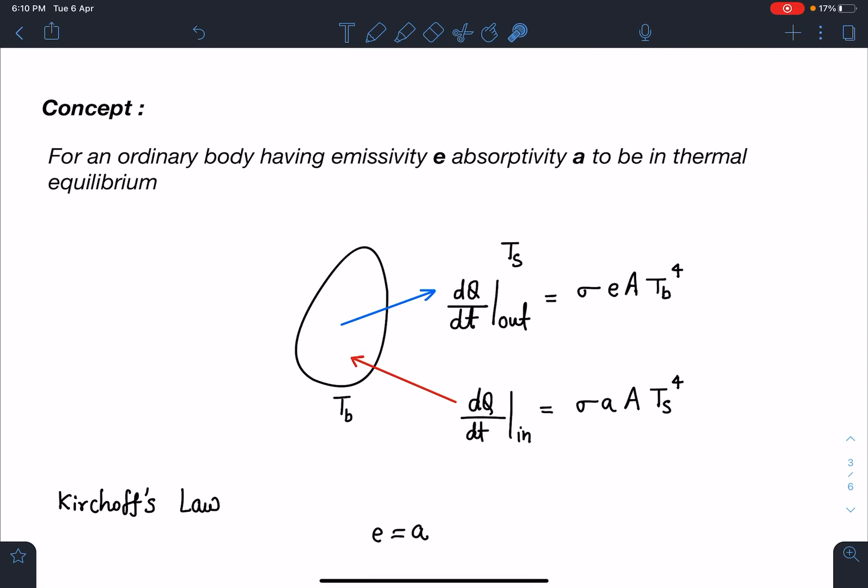Similarly, the body will receive some amount of energy from the atmosphere as well. If it was a black body, then it will receive σA·Ts⁴ from the atmosphere or from the surroundings.